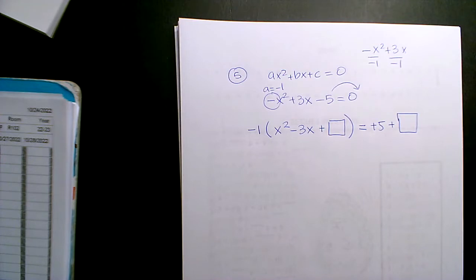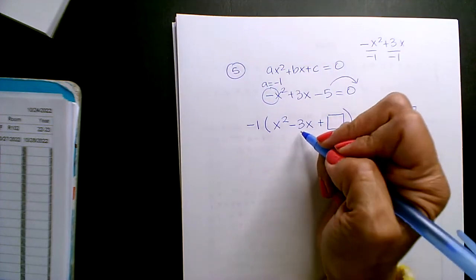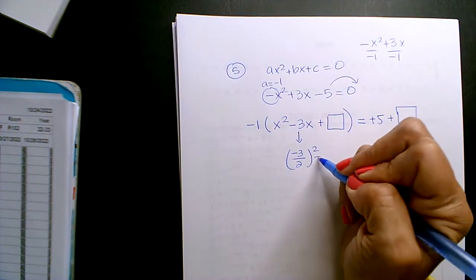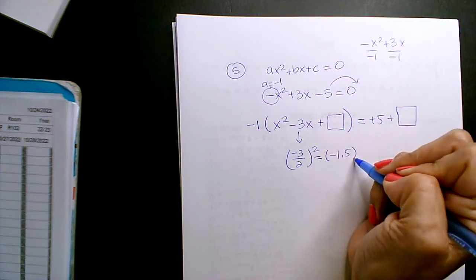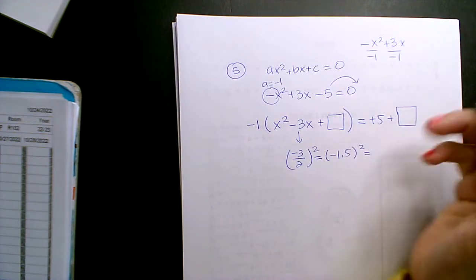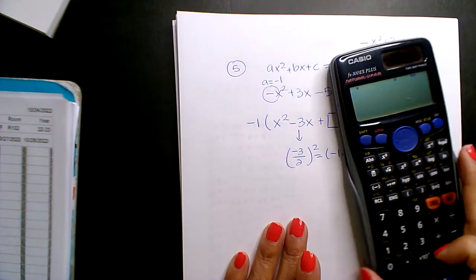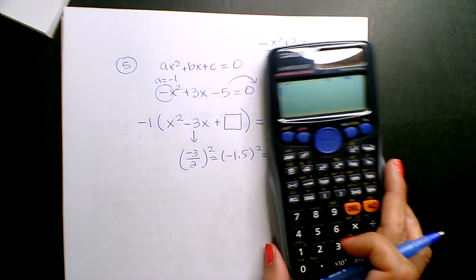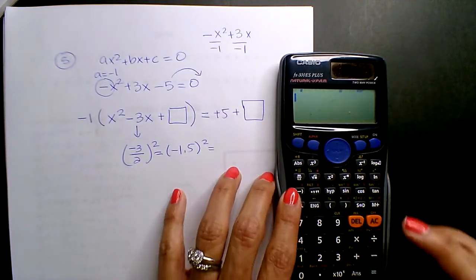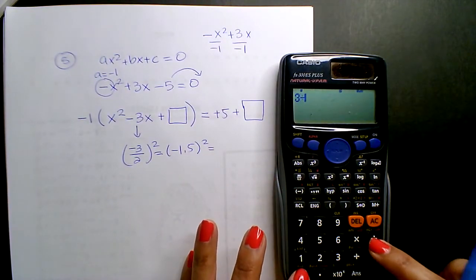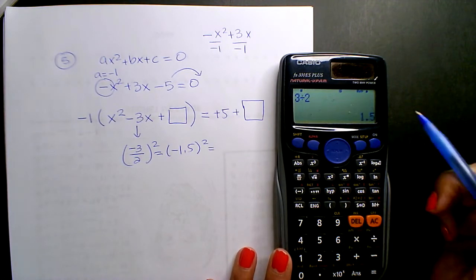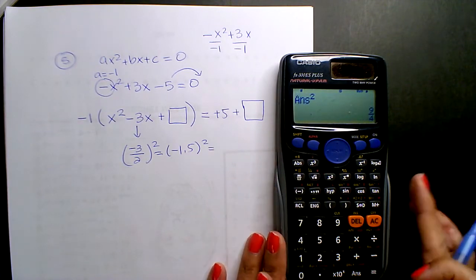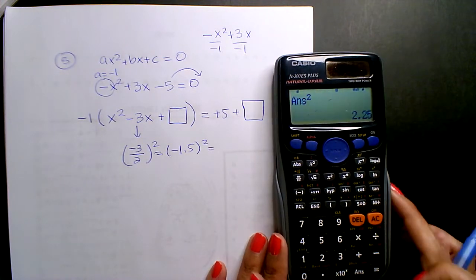You're going to do your B over 2 squared. So I'm going to take the B value, negative 3, divide it by 2, square it. I get negative 1.5, I square, and I get 2.25. Hold on. Let me move this out of the video. Okay, so 3 divided by 2 gives me 1.5, and then 1.5 squared is 2.25.